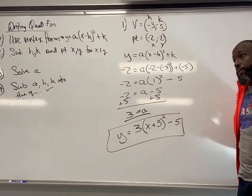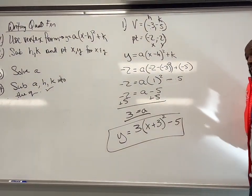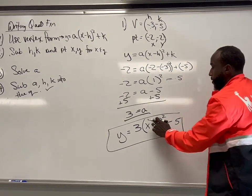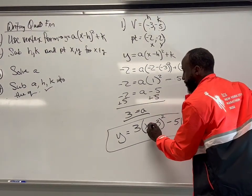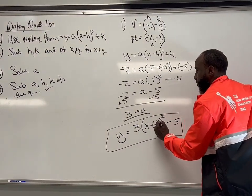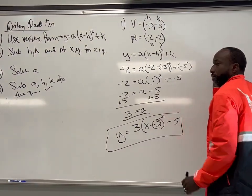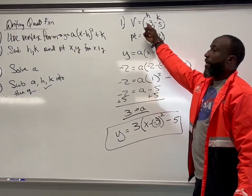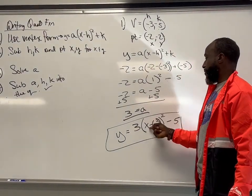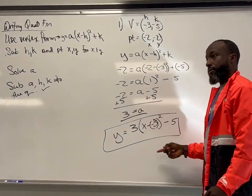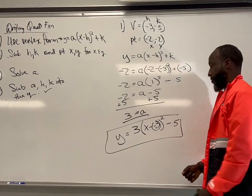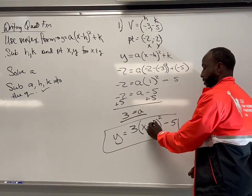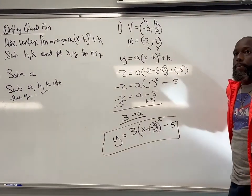Any questions? Where did you get the plus 3 from? Plus 3, because it was minus negative 3 — minus negative 3 makes it plus 3. And a equals 3, and then a goes right there.